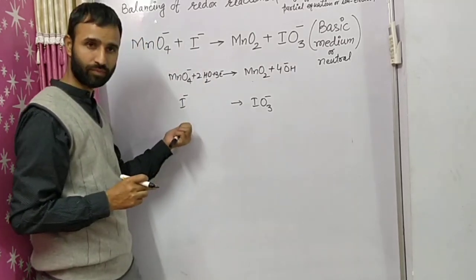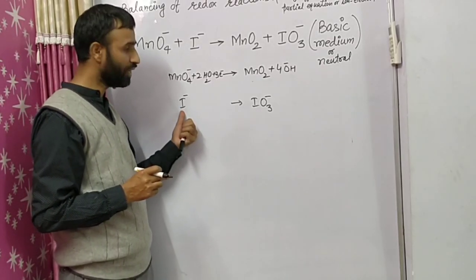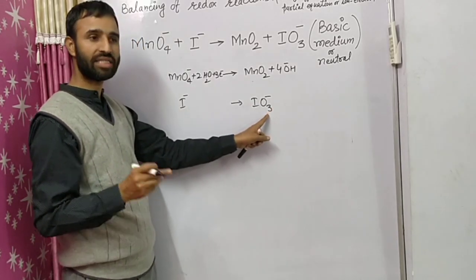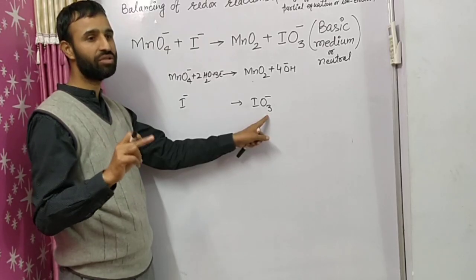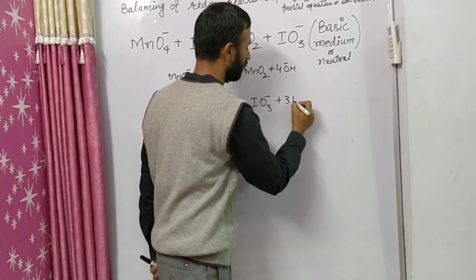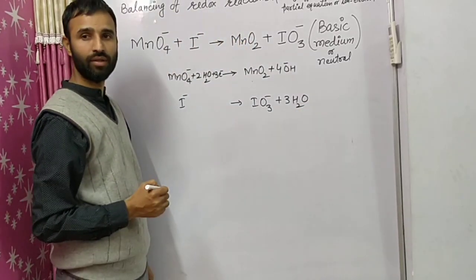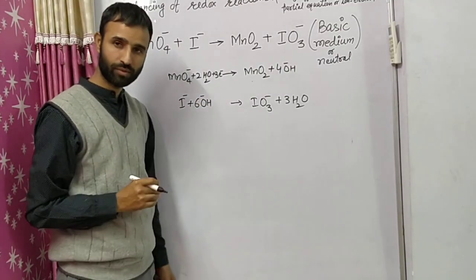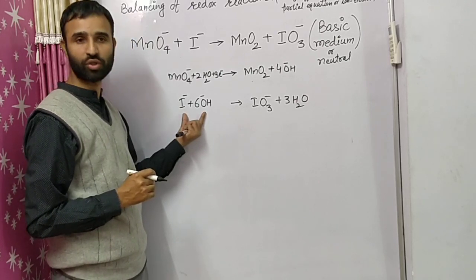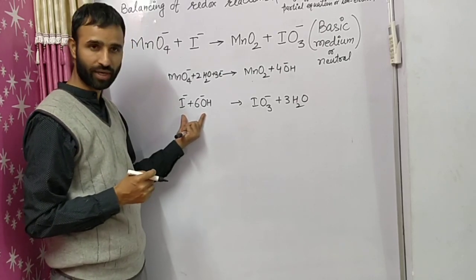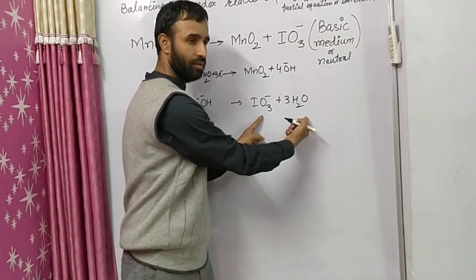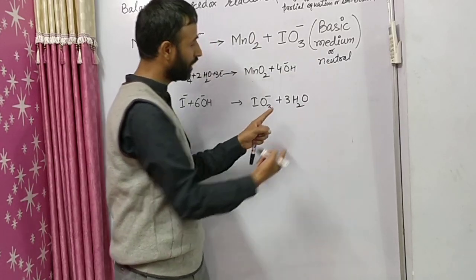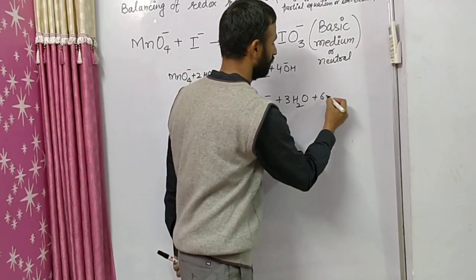Now for the second half-reaction, I⁻ to IO3⁻: we add H2O to the right side because that side has excess oxygen — three excess oxygens — so we add three H2O, and six OH⁻ ions to the opposite side. For charges: this side has seven negative, the other side has one negative. This side is deficient by six negative charges, so we add six electrons. The gain of electrons is three for the first equation and six for the second, so to balance, we multiply equation one by two.